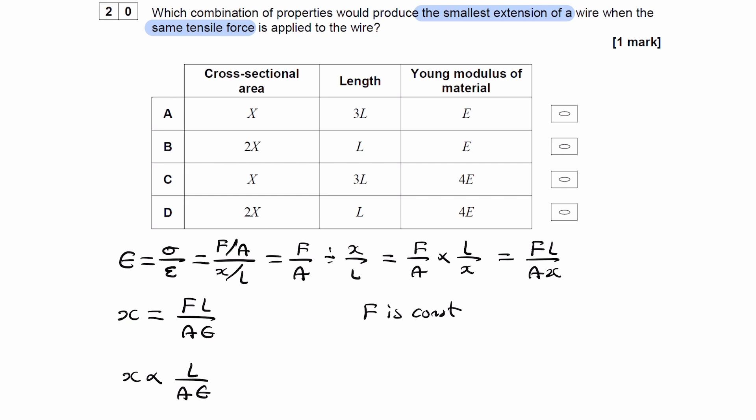So looking at option A, considering just the factors in front of X, L, and E, doing L over A E, we get 3 over 1 times 1, which is just 3 over 1. For B, we get 1, which is the factor in front of length, divided by 2 times 1, which is just 2.